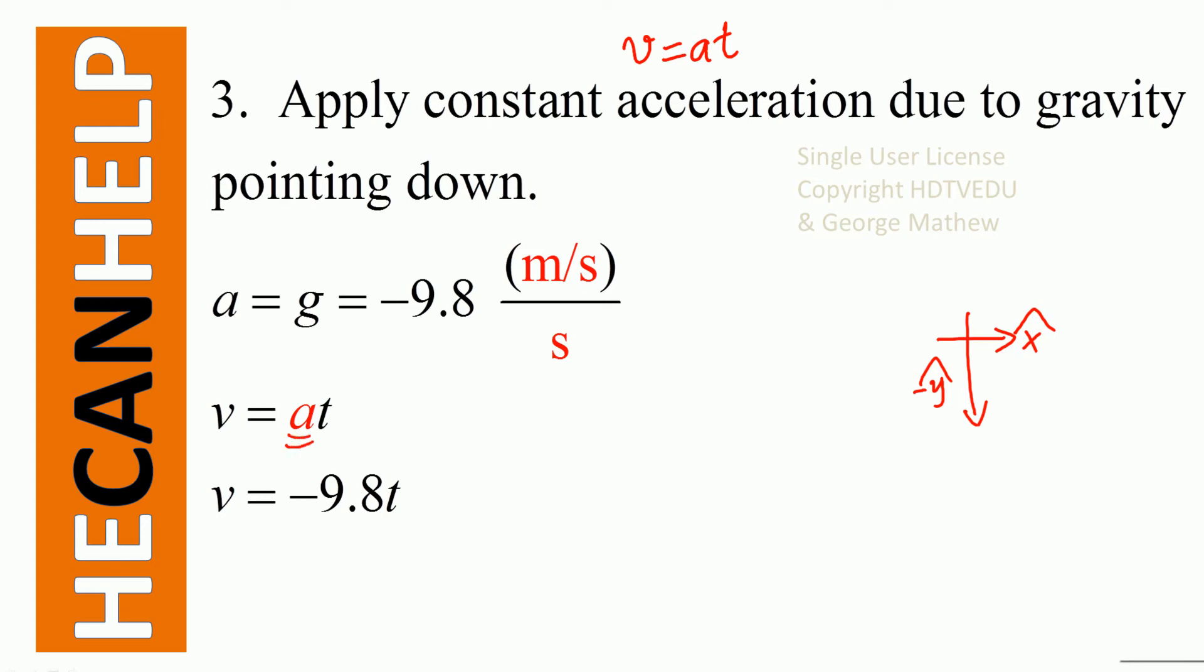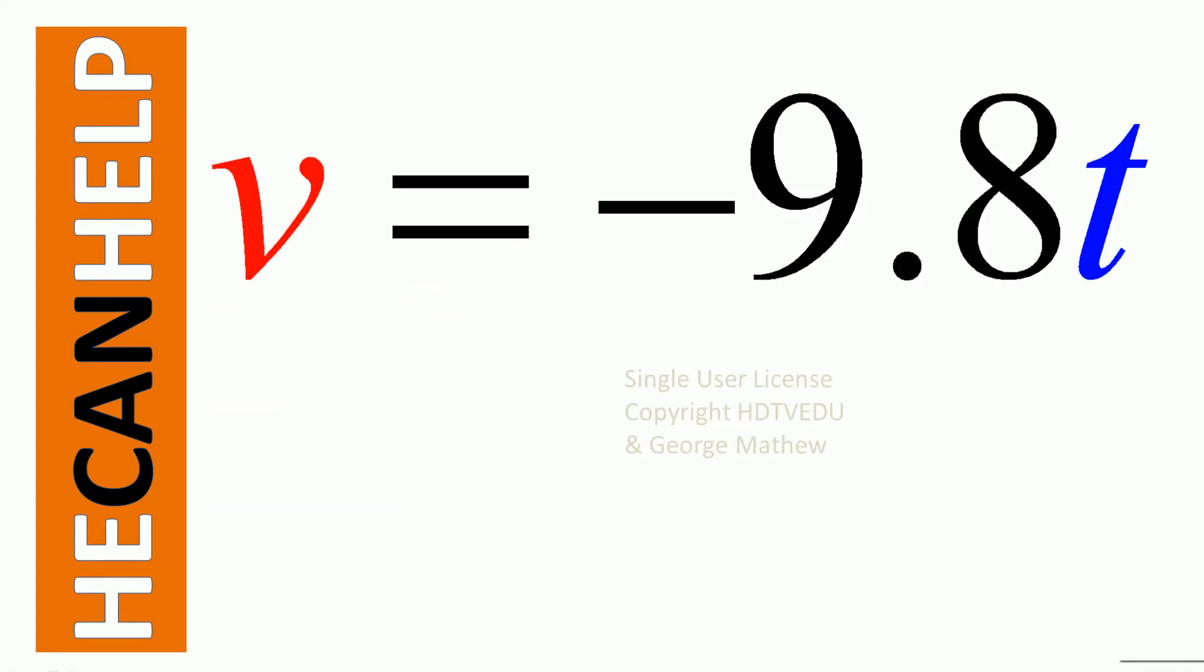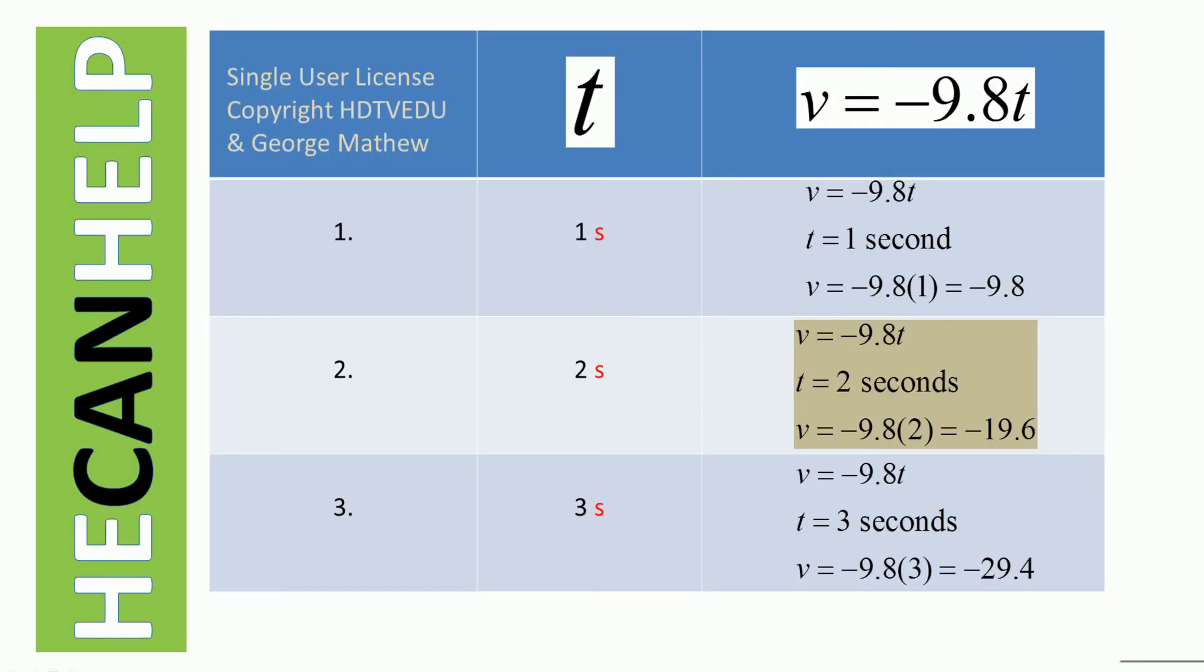Instead of a, we have negative 9.8. So what is our expression for the vertical velocity at any time t? Negative 9.8t. Do not forget, it was dropped from rest.